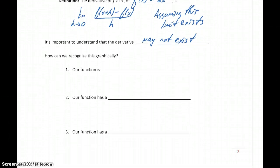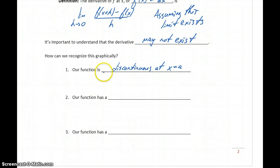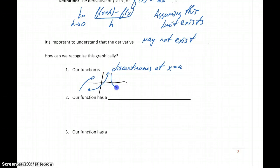What we want to look at is how to recognize those cases graphically. The derivative wouldn't exist if our function is discontinuous at some specific point x equals a. That could happen with a hole or a break in the graph, or with a vertical asymptote. If our function has a point of discontinuity, the derivative is undefined at that point. Everywhere else in the domain it will be differentiable, but at those specific values of x, the function is not differentiable.